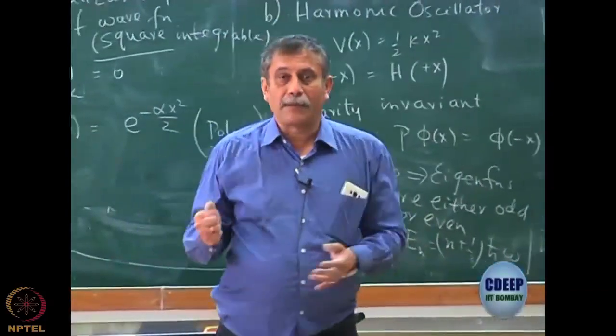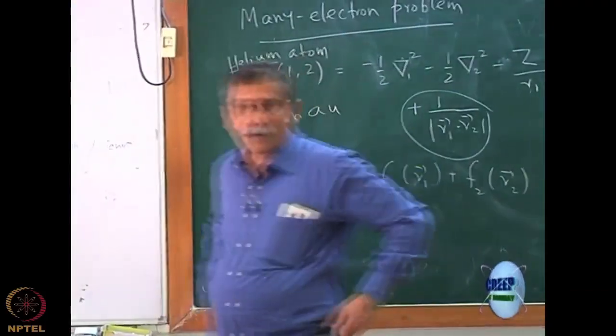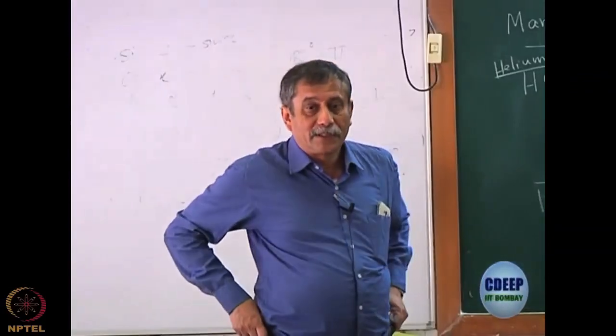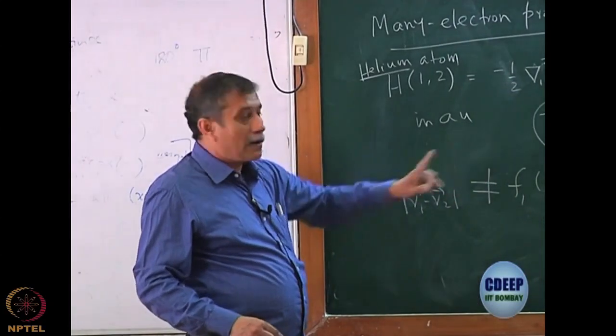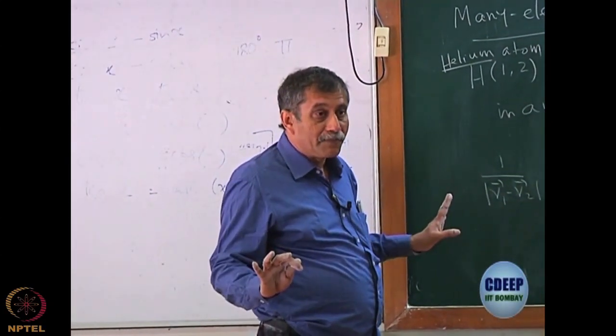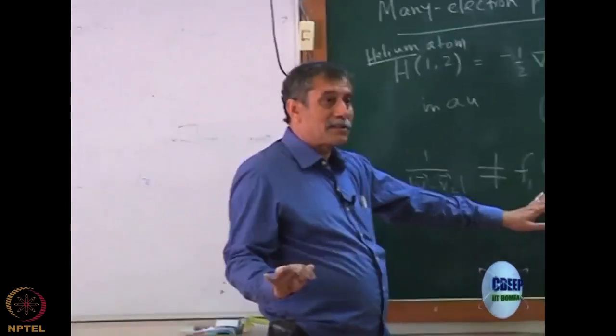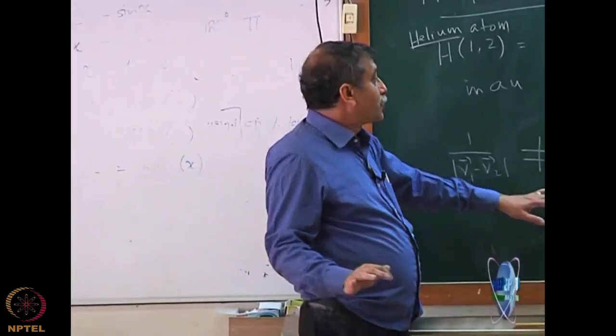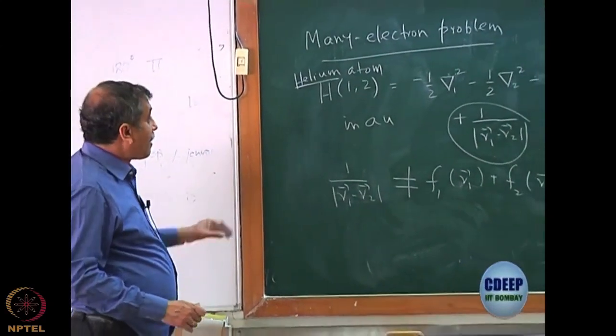The crux of the problem is that this is not even mathematically possible. Of course, a lot of people have made attempts to write, can I write this as F of R1 plus some F of R1 plus F2 of R2, but it's simply not possible. You can do a good job of it, but that is an approximation.